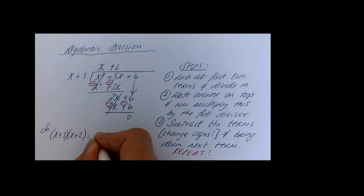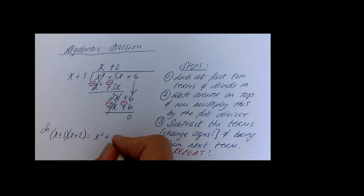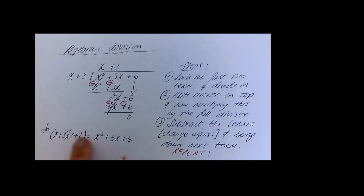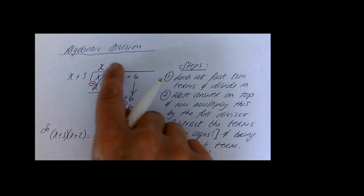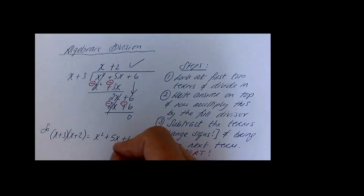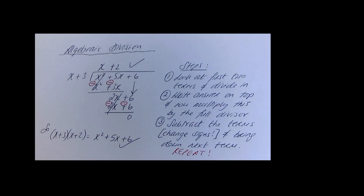In other words, x plus 3 times x plus 2 equals x squared plus 5x plus 6. That's just another way to think about it. Depending on how the question is asked, sometimes they want the division form, sometimes the factored form. Let's try another example.